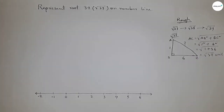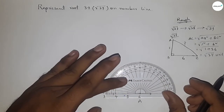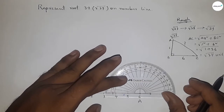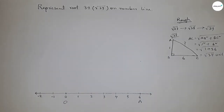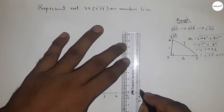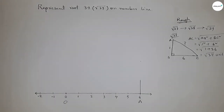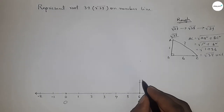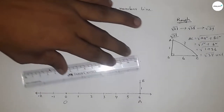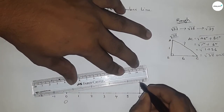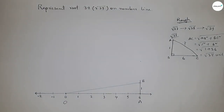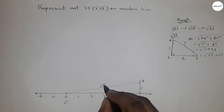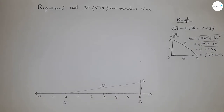Applying this concept between 0 and 6: take point A and draw a 90-degree angle using a protractor, creating a perpendicular line. Take one unit length by compass and mark point B. Join O and B — this length OB is root 37 units.